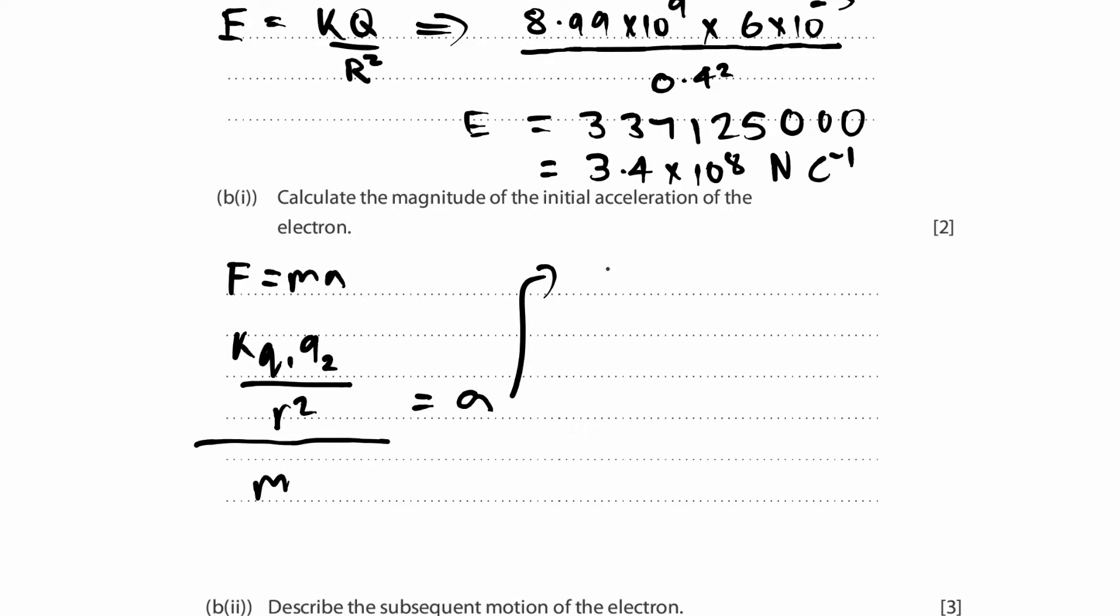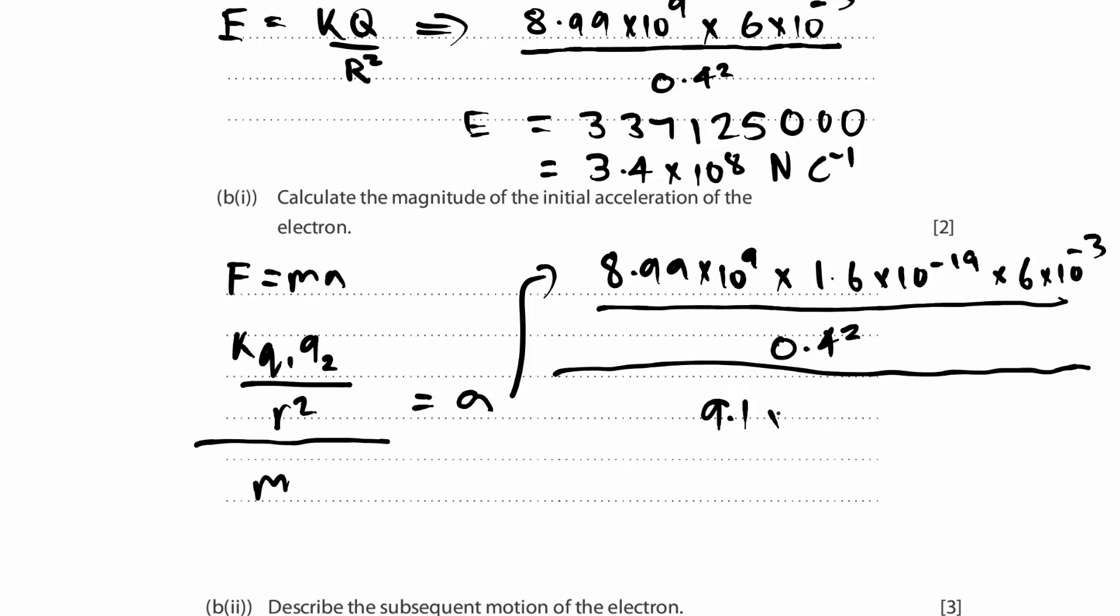So let's put this in our calculator. Let's write it down first. 8.99 × 10^9, the constant, times for the first charge, which is going to be that of the electron, we take magnitude of the charges. So 1.6 × 10^-19. This is actually given in your data booklet. So you don't need to worry. And last one, we have 6 × 10^-3. This thing over 0.4 squared. And this whole thing over the mass of the electron, which is actually given to you in the first few sections of the data booklet as 9.1 × 10^-31 kilograms. This is a very small number.